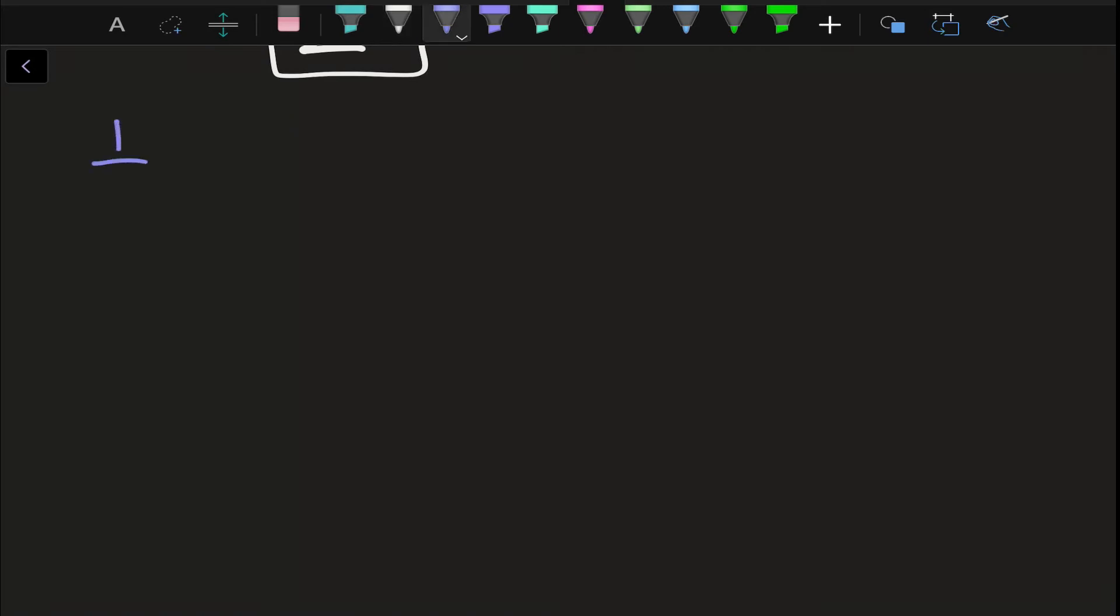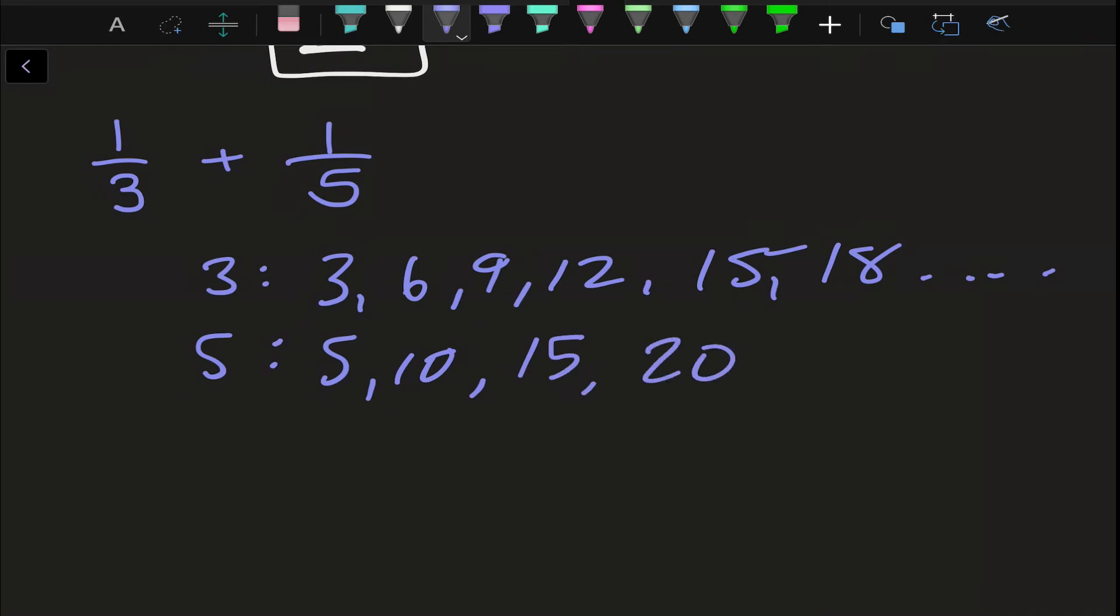So our next example, 1 third plus 1 fifth. Now I want to do the same thing. 3, 6, 9, 12, 15, 18, and so on. 5, 10, 15, 20, and forever. Now coming in here, 15 is our LCD.